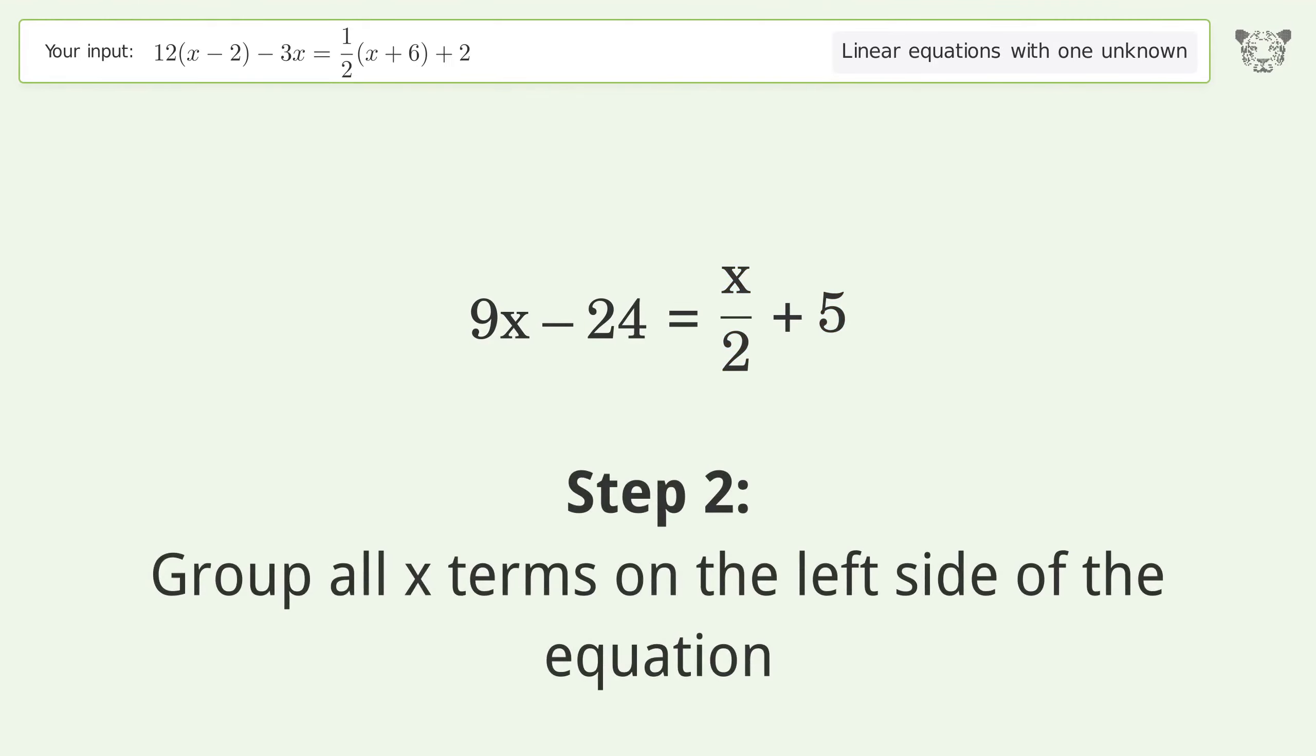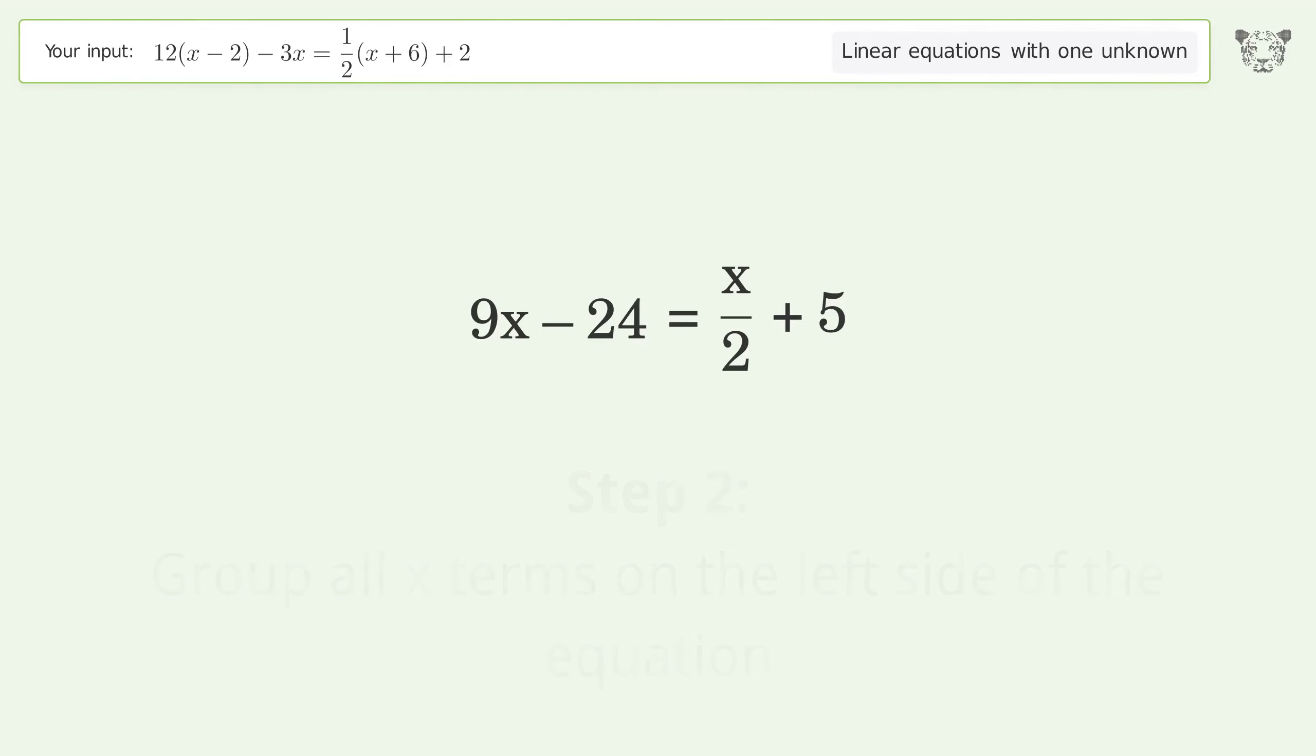Group all x terms on the left side of the equation. Subtract x over 2 from both sides.